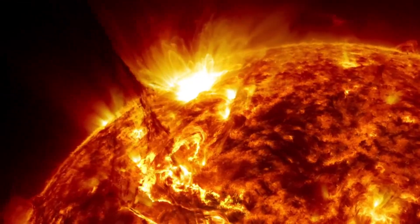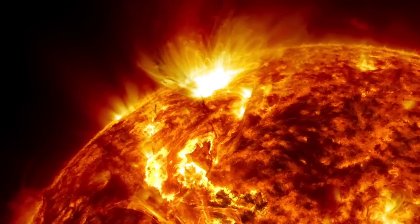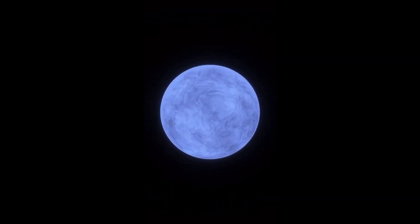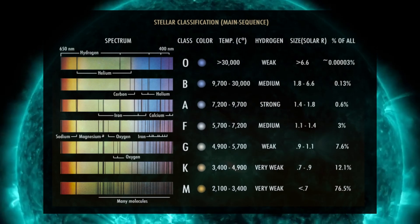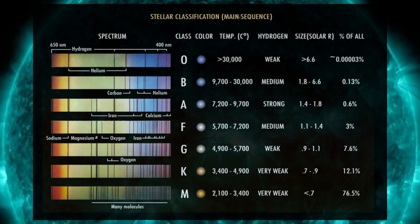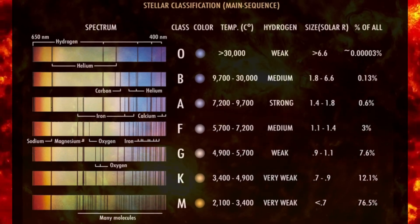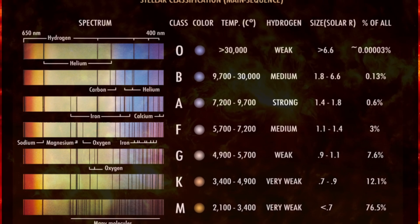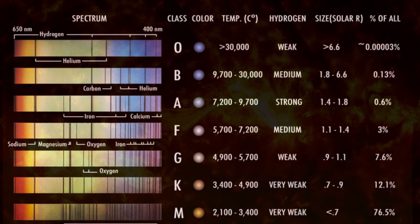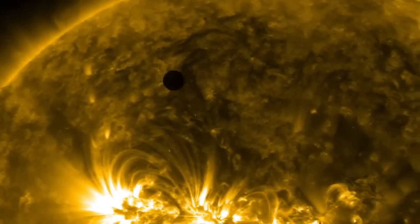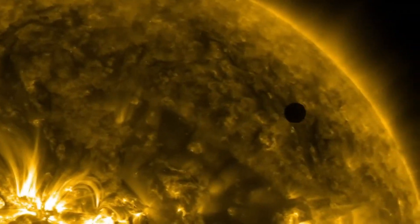But before we move on to this unusual star, let's understand what types of stars it belongs to and why its surface temperature is so low. There are various classifications of stars. One of them is the spectral classification. According to this classification, stars are distinguished by their spectra, which are used in astronomy and astrophysics.